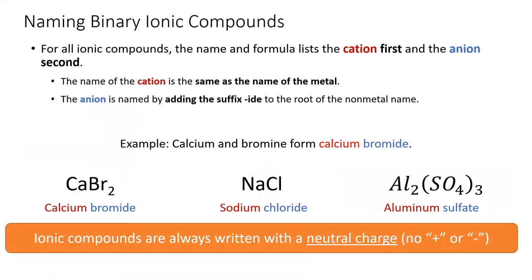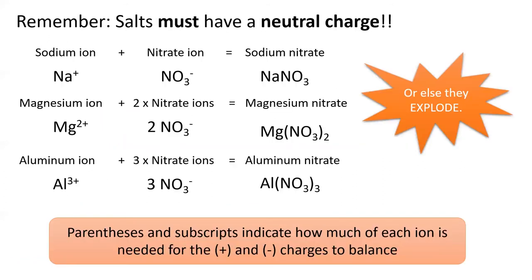That's how we name ionic compounds. In general, we name cation first then anion, and they mostly end in "-ide" unless it includes a polyatomic anion. Importantly, salts as written must have a neutral charge. For these examples, we need to increase the number of nitrates in the formula as the charge on the cation increases. Use parentheses and subscripts to indicate how much of each ion is needed for the charges to balance.